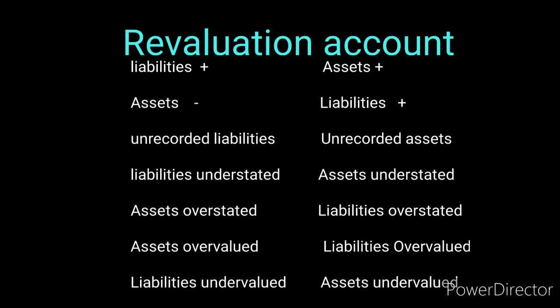Revaluation account is a most important account, typically asked in 6-mark questions. The debit side of the revaluation account includes: liabilities increase, assets decrease, undervaluation of liabilities, overvaluation of assets, understated liabilities, and unrecorded liabilities. The credit side includes: asset increases, liability decreases, undervaluation of assets, overvaluation of liabilities, understated assets, and unrecorded assets.